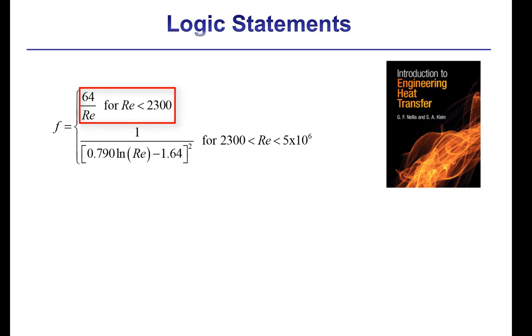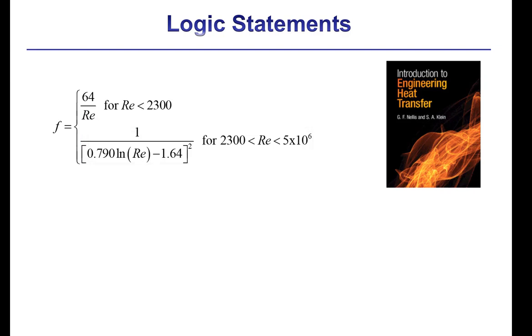So for laminar flow, so the Reynolds number less than 2300, the friction factor is going to be given by this equation, whereas for turbulent flow, it'll be given by this correlation. And you'll notice this correlation has a range of applicability, so you can't use it above this upper limit on Reynolds number.